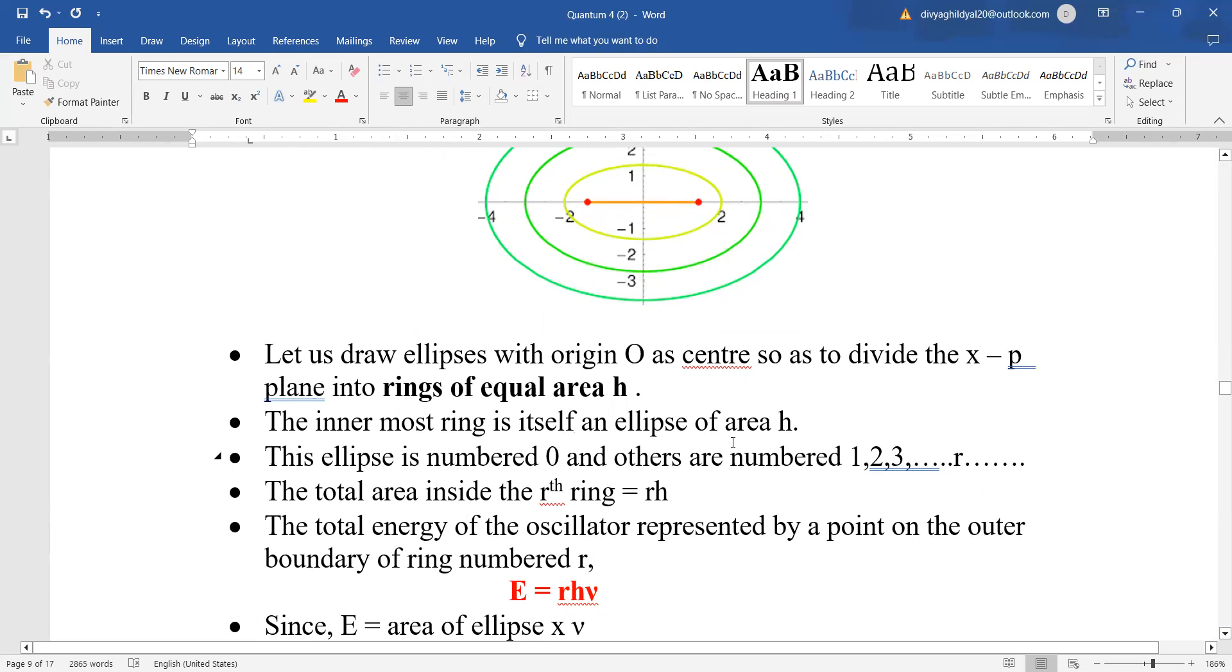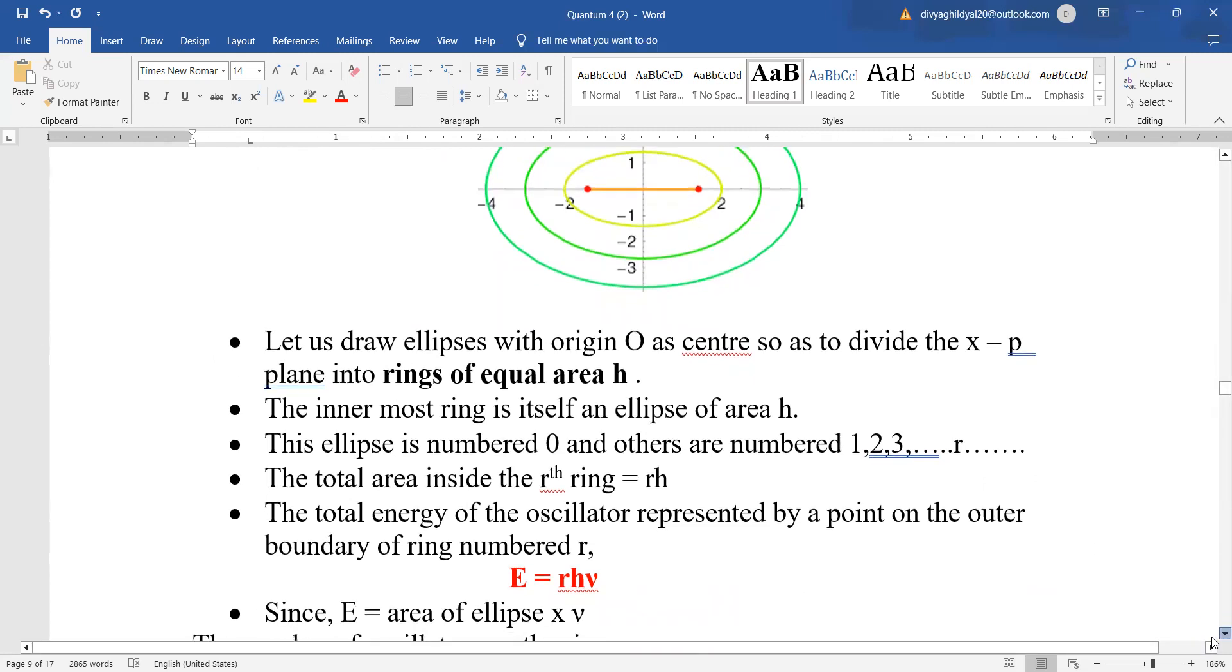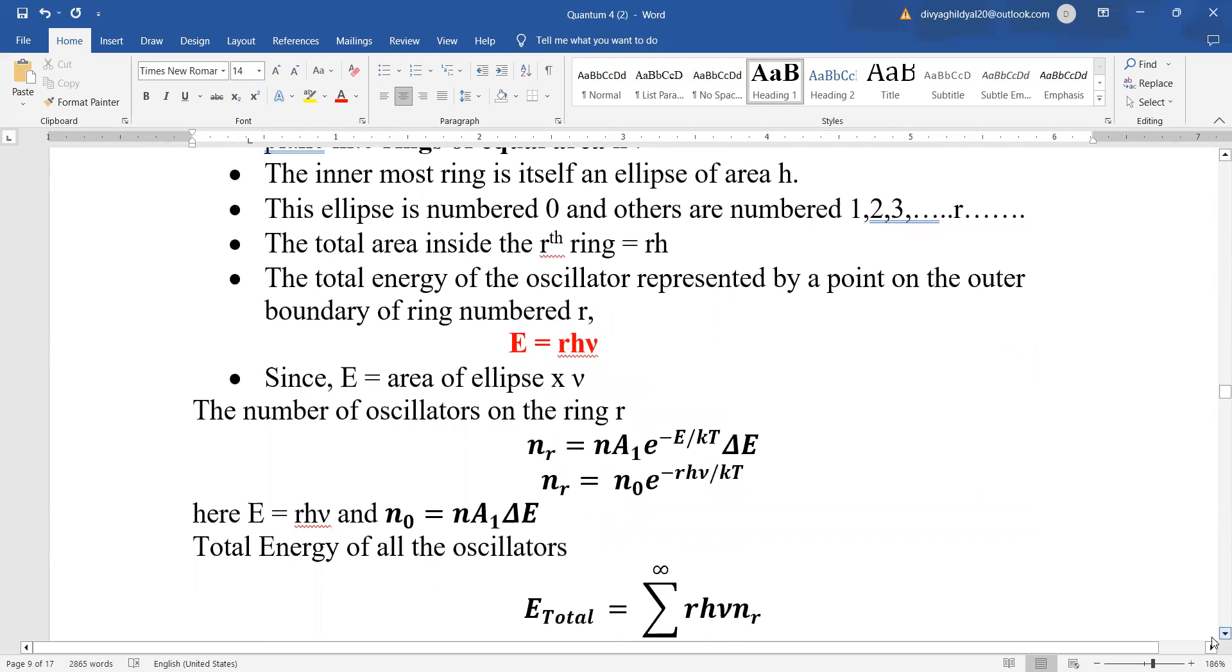We get for like this is the ellipse we are talking about and we know that the area of each ring is equal to h. So, the innermost ring in itself is an ellipse of area h. The ellipses are numbered as 0, 1, 2, 3 etc. So, the total area inside the rth ring is equal to rh. Total energy of oscillator e equal to rh μ. Area of ellipse into frequency.